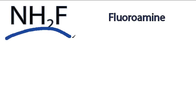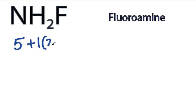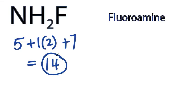This is the Lewis structure for NH2F, Fluoroamine. Nitrogen has 5 valence electrons, Hydrogen has 1, we have 2 Hydrogens, and then Fluorine is 7, for a total of 14 valence electrons for the NH2F Lewis structure.